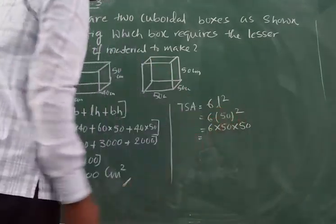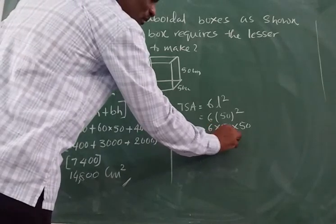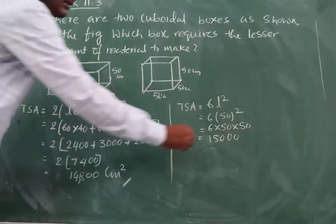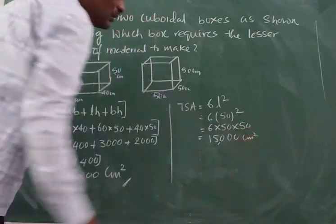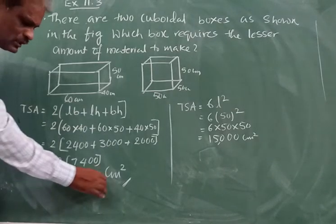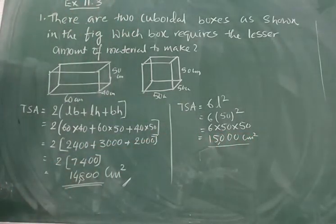So now multiply this one. 6 fives are 30. 30 into 5, 150. So now 15,000. Now you look at this. This is having 14,800. This is having 15,000 cm². Which one requires less amount of material?